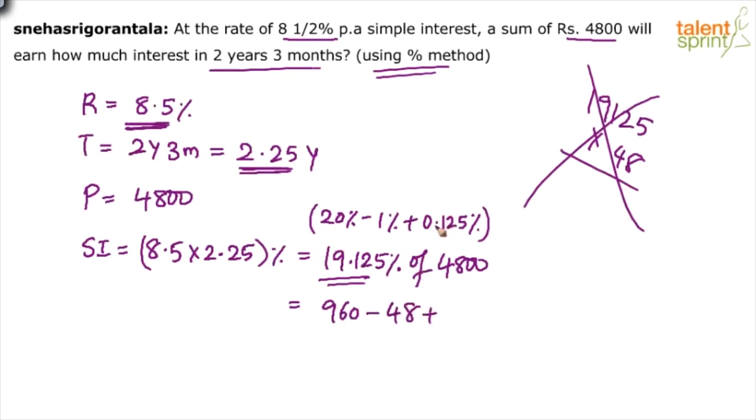20% of 4,800 would be 960 minus 1% is 48 plus 0.125 percentage. For a moment let us assume that this is 12.5 percentage. What is 12.5% of 4,800? 12.5% is 1/8th of the value. 1/8th of 4,800 is 600. So, 12.5% is equal to 600.